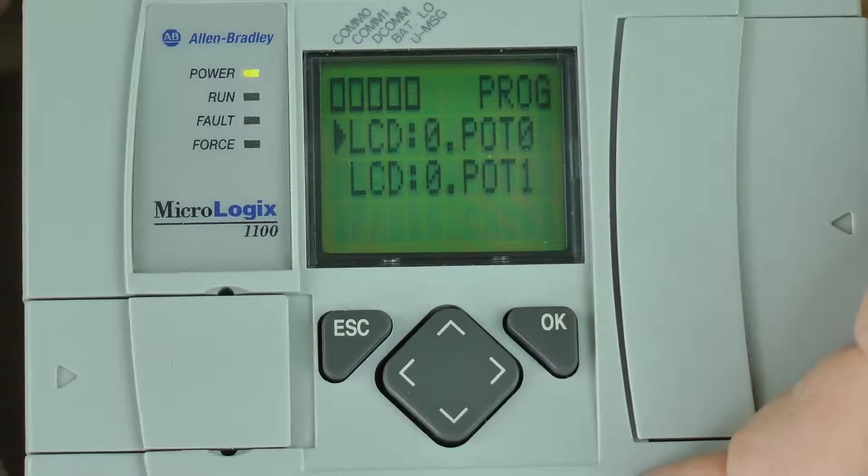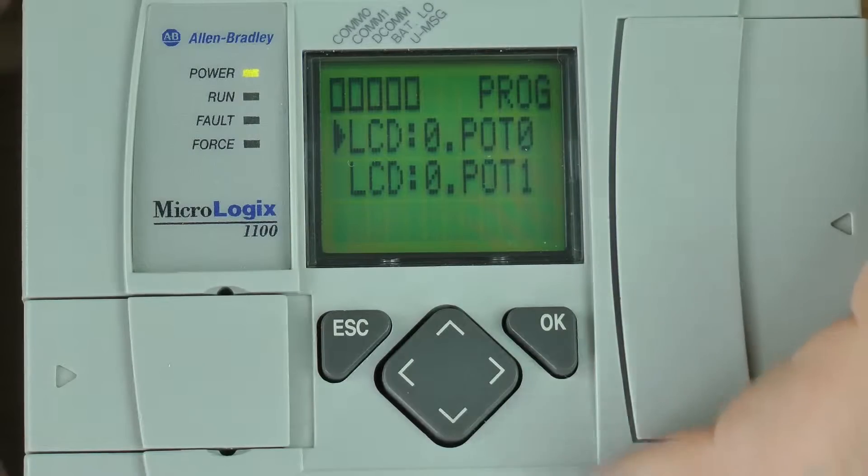Here I can see I have LCD zero dot pot zero and LCD zero dot pot one. We're going to start with pot zero, so I'm going to leave that selected and press the okay button.